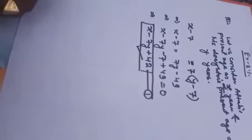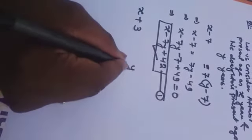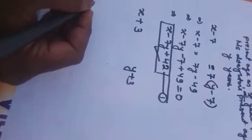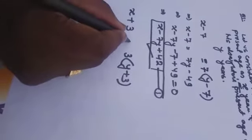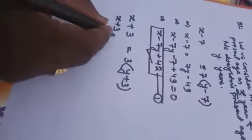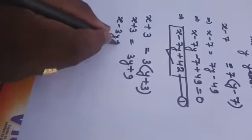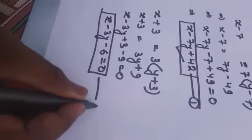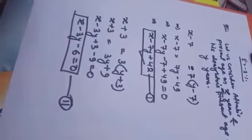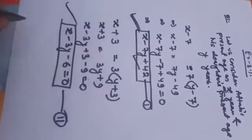Now, for the second situation: '3 years from now, I shall be 3 times as old as you will be.' If Aftab's present age is X years, then after 3 years his age will be X plus 3, and his daughter's age will be Y plus 3. According to the condition, X plus 3 = 3(Y plus 3), which gives X plus 3 = 3Y plus 9. Rearranging, X minus 3Y minus 6 = 0. This is the second equation derived from the second situation, and we have now solved both situations algebraically.